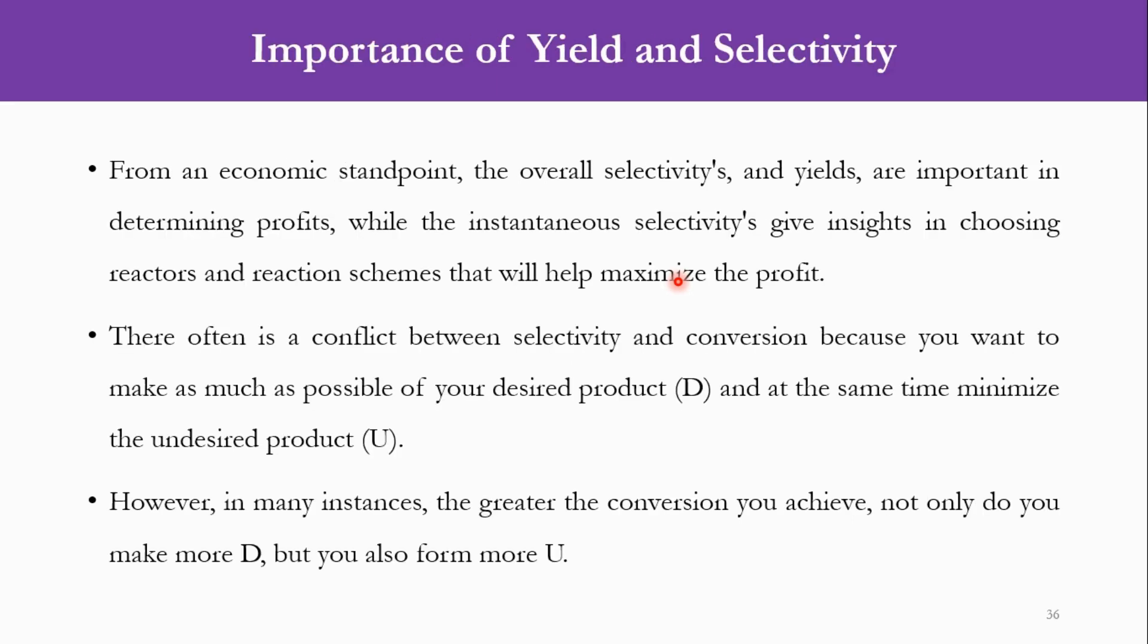Now economically, if we talk about what parameters are most important, the overall selectivity and overall yield are important while we are talking about the profits. While the instantaneous selectivity is helpful in deciding the reaction schemes, the reactors that will help maximize the profit.